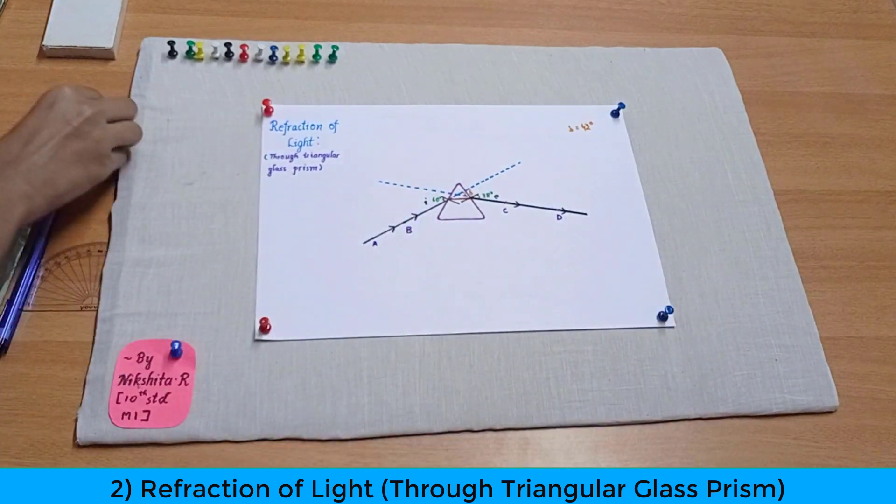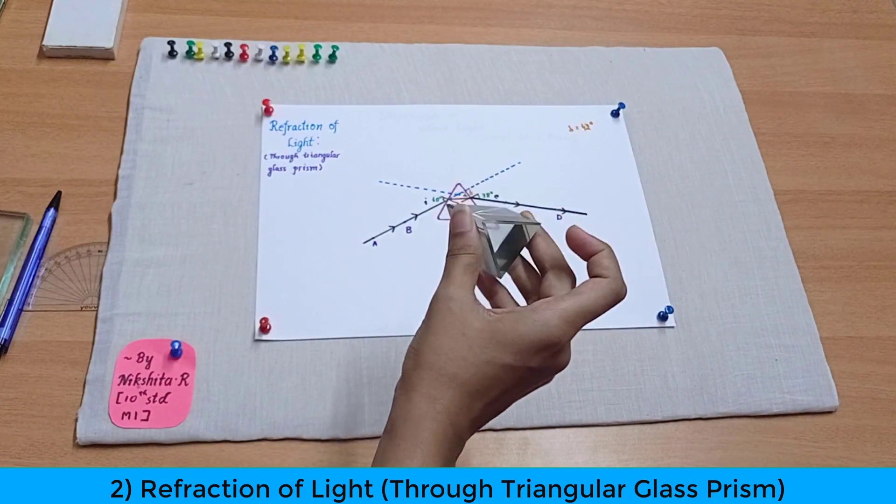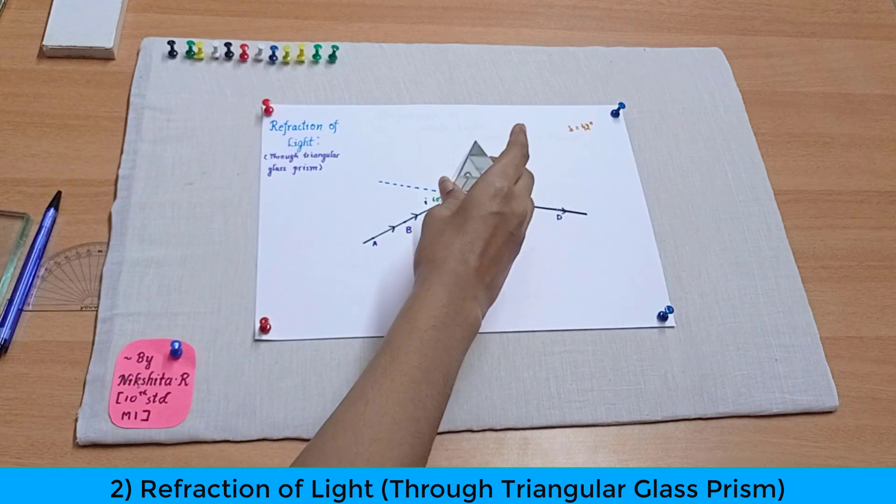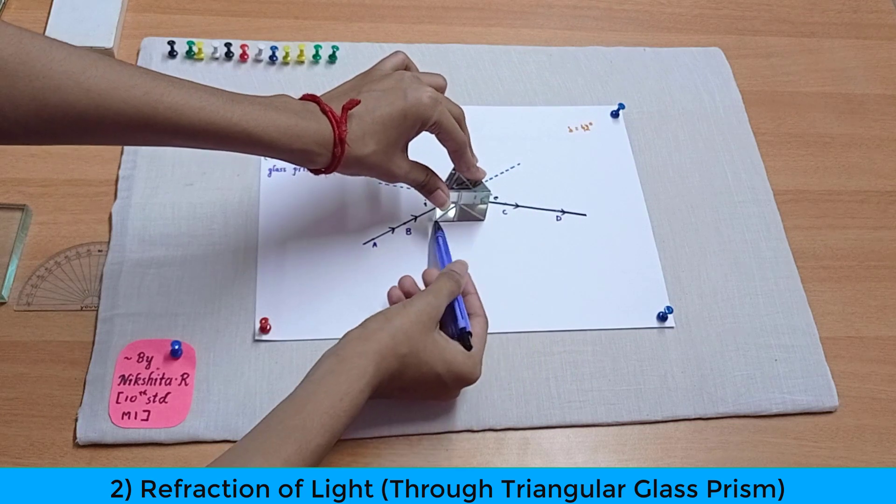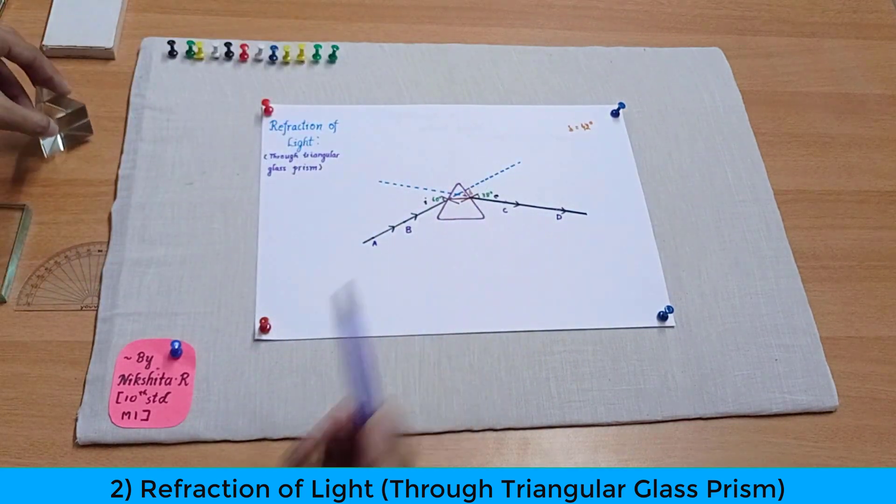So now we have taken a triangular glass prism over here and I will be placing it in the middle of a paper. And then I will just trace its borders out and as you can see I have already done that for you.